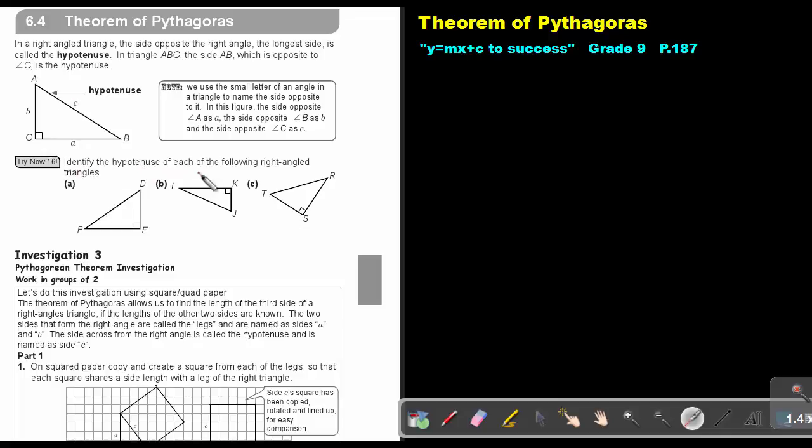Identify the hypotenuse of each of the following right angle triangles. Now remember, the hypotenuse is the longest side and it's always opposite the 90 degrees. So this will be my hypotenuse. This is the 90. This will be my hypotenuse. And this is the 90. This will be my hypotenuse. So it will be the side DF, it will be LJ, and it will be TR.